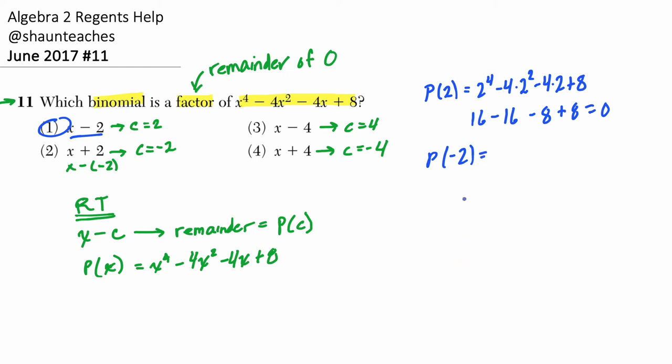and they're not factors of this polynomial. So here we plug in negative 2. Let's see what happens. We get negative 2 to the 4th minus 4 times negative 2 squared minus 4 times negative 2, just plugging in the c value for these x's right here, plus 8.